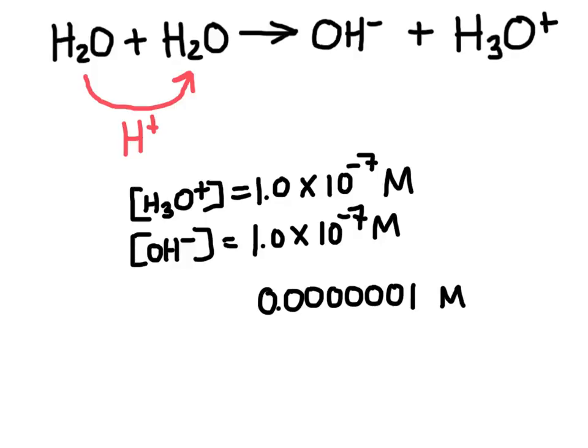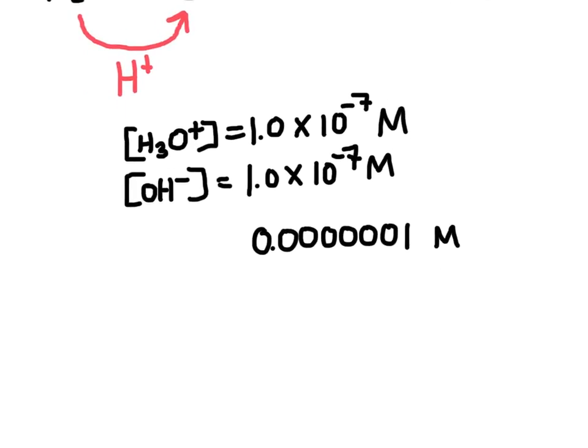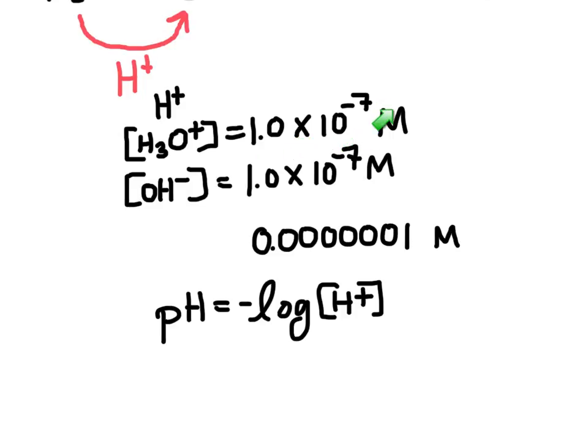Now numbers this small are a little bit annoying to work with. So scientists came up with a better system called pH. pH is actually based off of the concentration of hydronium, or in other words, the concentration of H+. pH is calculated by taking the negative log of the concentration of hydrogen ions, or in other words, hydronium ions. When we take the pH of 1 times 10 to the negative 7, we end up with a pH of exactly 7.